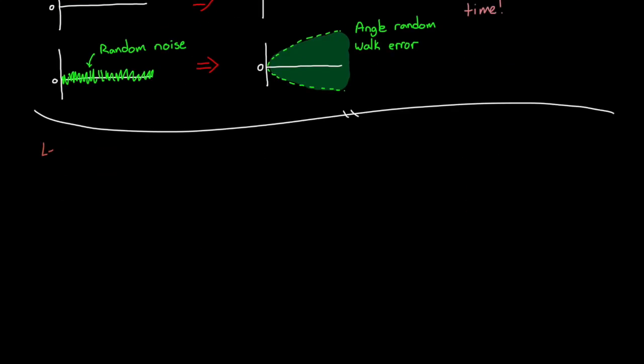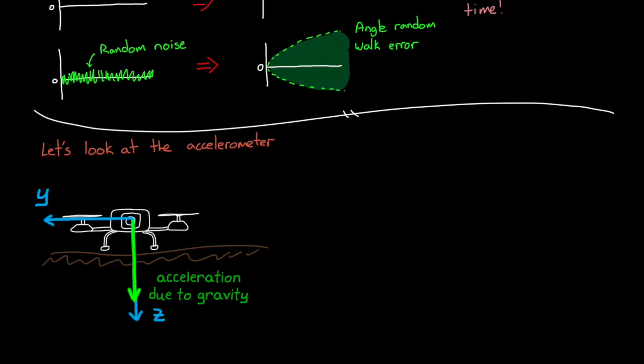Now, let's look at how to estimate roll angle using the accelerometer. Gravity is always pointing down, and near the surface of the earth it causes an acceleration of 1g. Let's imagine that the drone is sitting stationary on the ground. And since there's no other accelerations acting on the drone, the accelerometer will only be measuring the acceleration due to gravity.